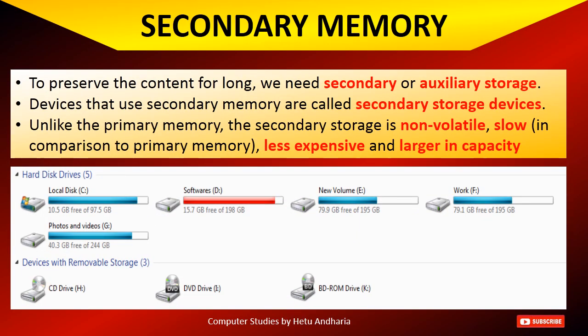Now, secondary memory. If the electricity goes off while you are preparing a PowerPoint presentation, the data gets lost — but after you save it in the hard disk, it is preserved. Here I have given the photograph of the hard disk. When you press Ctrl+S or click File > Save, you select a drive such as local disk D, E, or F and save the file. These partitions of the hard disk form the secondary memory. It is a permanent memory. To preserve content for a long time we need to save it in the secondary memory, also called auxiliary storage device.